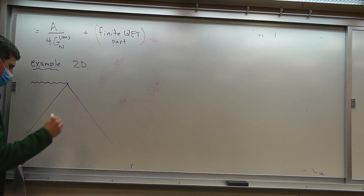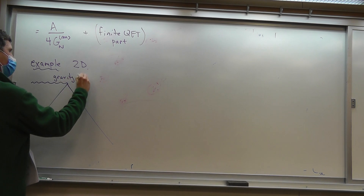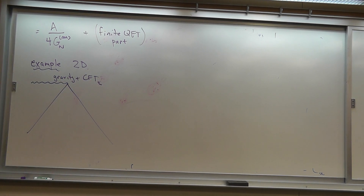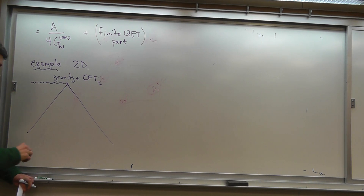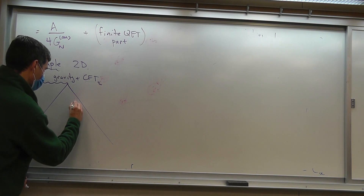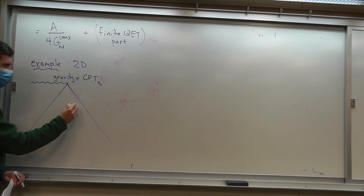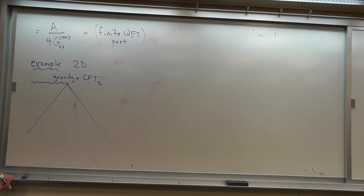Remember that the von Neumann entropy — say we're doing a CFT — so this is gravity plus CFT. The contribution of the CFT to the von Neumann entropy is logarithmic in the system size. That's the calculation we did last time. So everything is infinite. What I'm going to do is put an IR cutoff by putting a point x2 right here.